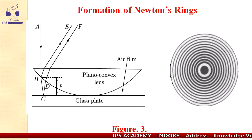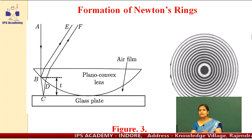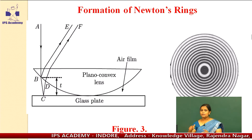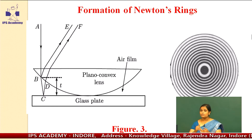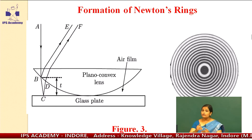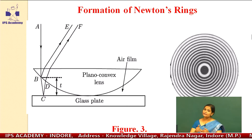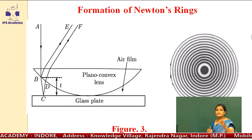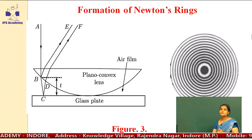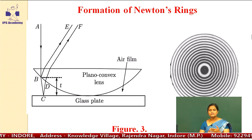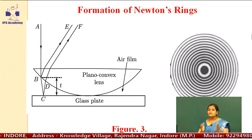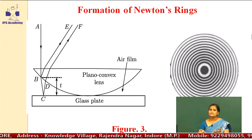What is the arrangement here? Initially, there is a plain glass plate and on the plain glass plate, there is a plano-convex lens, and there is an air film in between the plano-convex lens and the glass plate. There is a gap in between these two — plano-convex lens and glass plate. This is an air film having thickness T.